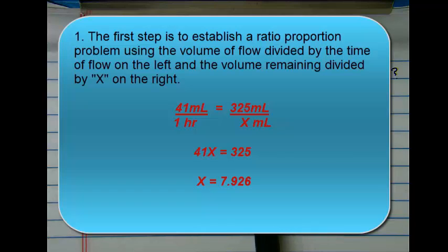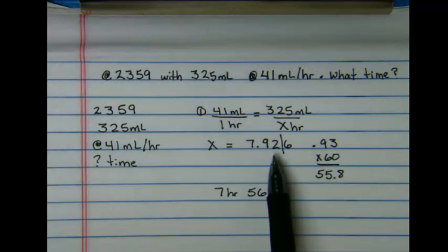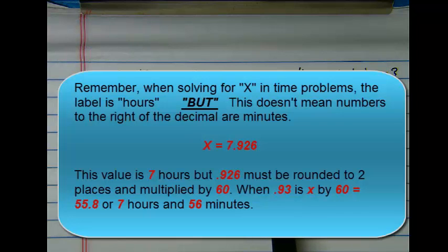Again, once we solve for x hours, the right-hand side of the decimal represents percentage of time, not actual time. This would mean 7 hours and .926, which we would round to .93 and multiply by 60 to figure out this is 55.8 minutes.